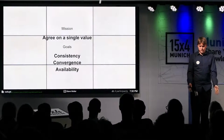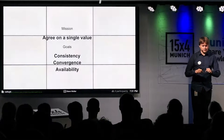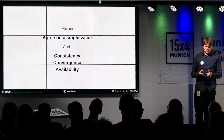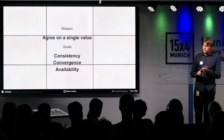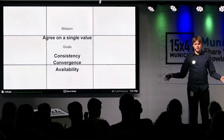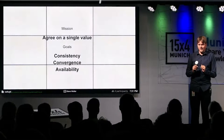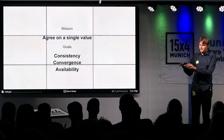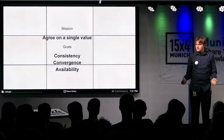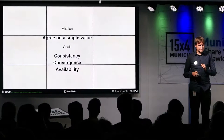In more formal terms, the mission is to agree on one single value with a bunch of computers, with three goals: consistency, convergence, and availability. Consistency means they all agree on the same value. Convergence means they do agree at some point — they might take their time but they will get there. Availability means no matter which of these computers fails, they will still reach consensus — there's no single point of failure.